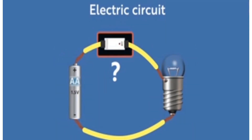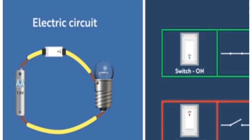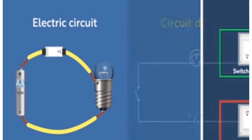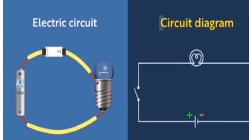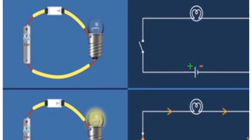Let us see when current flows in our circuit and what is the role of the key. We have seen the open key and the closed key - which is the switch. When the switch is on, the current starts flowing. When the switch is off, the current does not flow. That is the symbol representing the open key as well as the closed key in a circuit. When the switch is off, the current does not flow. When the switch is on, the current starts flowing in the circuit.